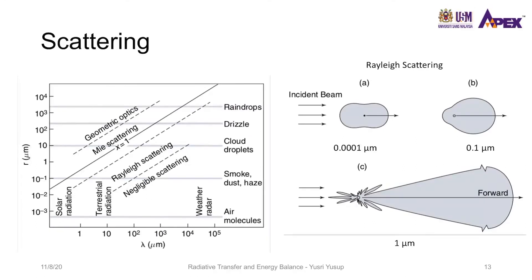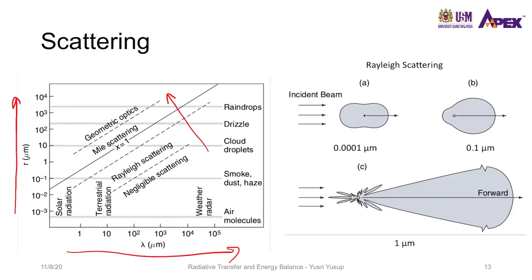Now we look into the scattering phenomenon in the atmosphere due to gases and particles. In the figure on the left, the y-axis is the size of the gas and particles while the x-axis is the wavelength of the radiation or light. We see that if the size of the particles and gases increases, scattering will be more evident, and this occurs concurrently with the wavelength. For example, if an air molecule is of a certain size and the light is of a corresponding wavelength, then there is negligible scattering; but for the same wavelength with a bigger molecule, there will be considerable scattering.